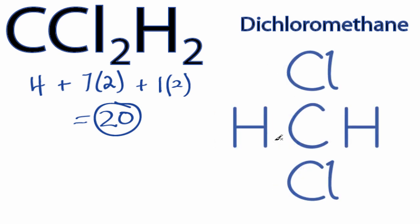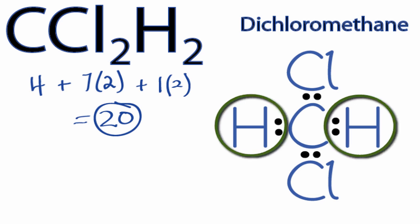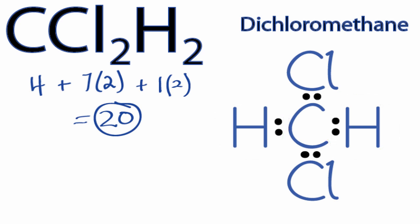We have 20 valence electrons for the CCl2H2 Lewis structure. We'll put two between atoms to form chemical bonds. We've used eight valence electrons. Hydrogens only need two valence electrons, so both of the hydrogens have their outer shells full. So we'll go around the chlorines until we fill their octets or use 20 valence electrons. So we have eight, ten, and 20 valence electrons.